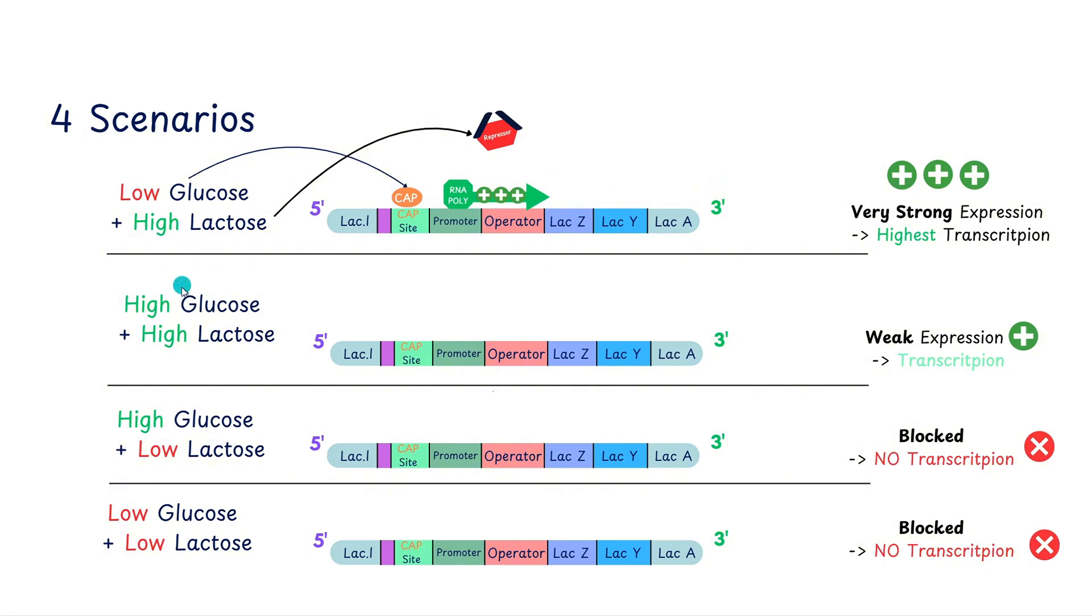Second case scenario is that we have high glucose. When we have high glucose, we don't have as much ATP being converted to cAMP, and thus we don't see that CAP binding on that CAP site. However, with high lactose, we still have the case where some of it is converted into allolactose, or a lot of it's converted into allolactose, and it causes that conformational change in the repressor, and it no longer binds the operator, and the RNA polymerase is able to transcribe the lac operon freely. However, this is a weak expression and only just one plus sign as we see here because we don't have that elemental boost from that CAP on the CAP site.